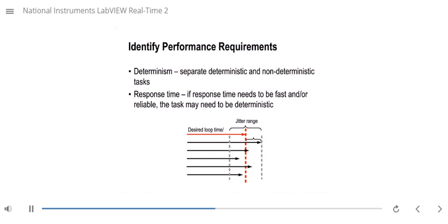Determinism is how wide of a range we have between when we expect the operation to execute and when it actually does. So you can see in the graphic here, we have a desired loop time. This will be how long we expect this loop to take to iterate. And you'll also notice a jitter range. That jitter range is essentially the plus or minus value. If we say that a loop is going to take 50 milliseconds plus or minus 2 milliseconds, that jitter range would be plus or minus 2 milliseconds.